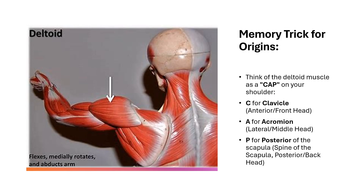As we know, anatomy has a lot of information to learn. So how do you remember the three origins of the deltoid muscle? The insertion is easy because there's only one insertion and it links to the name of the muscle — the deltoid tuberosity.